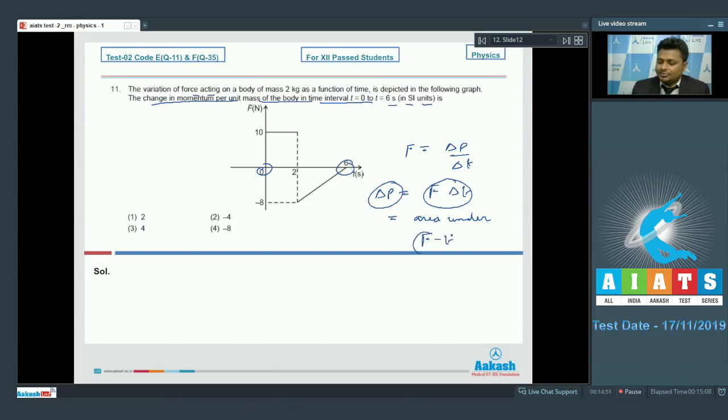Let us calculate change in momentum first. Delta p is equal to area under force-time graph with sign because momentum is a vector quantity. 10 into 2 that is 20 minus half base that is 4, height that is 10. Solving it, change in momentum will be 4 kilogram meter per second.